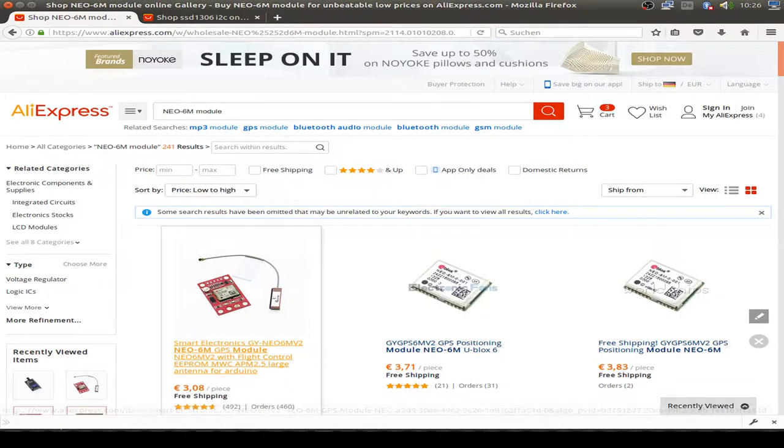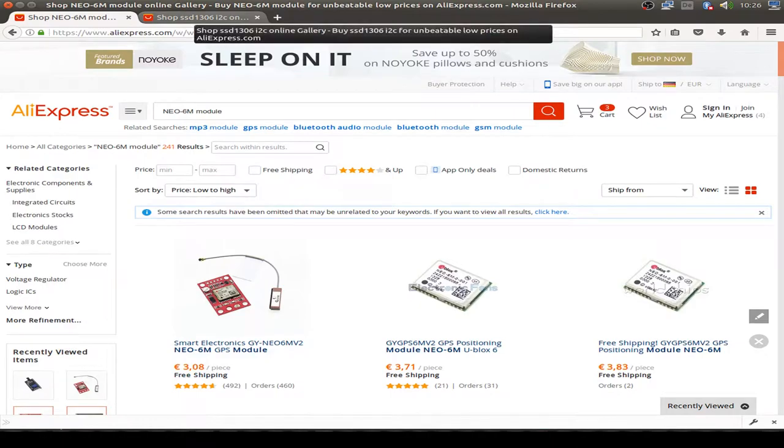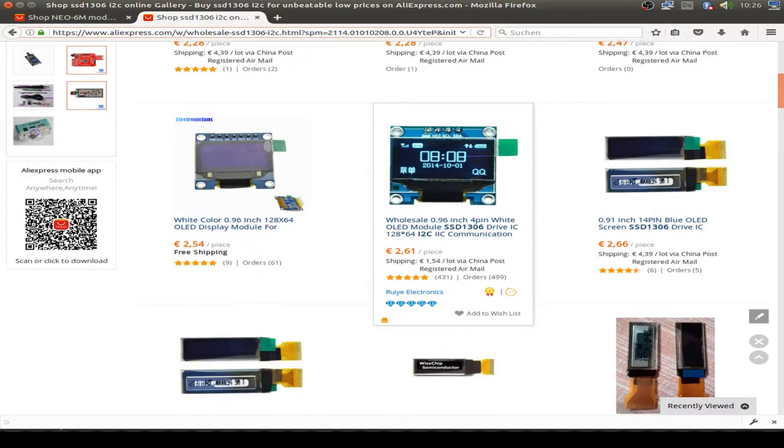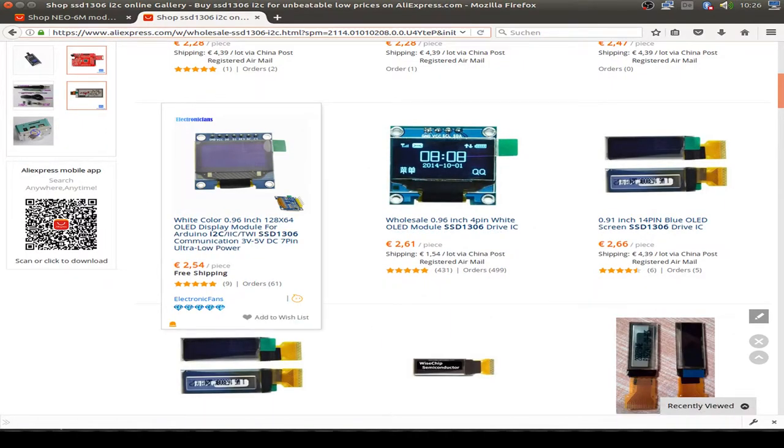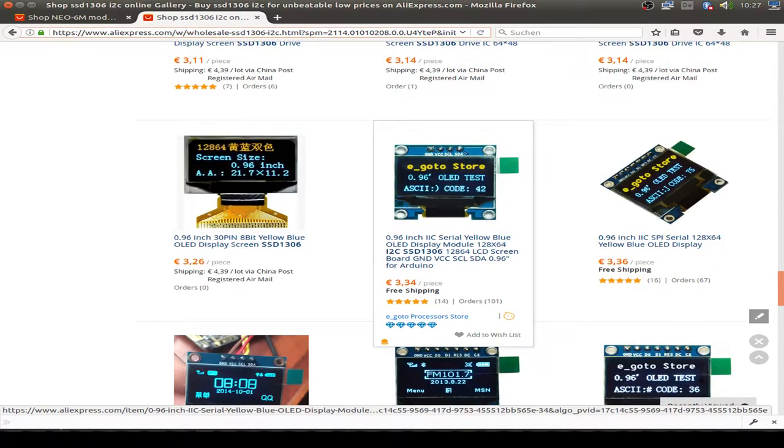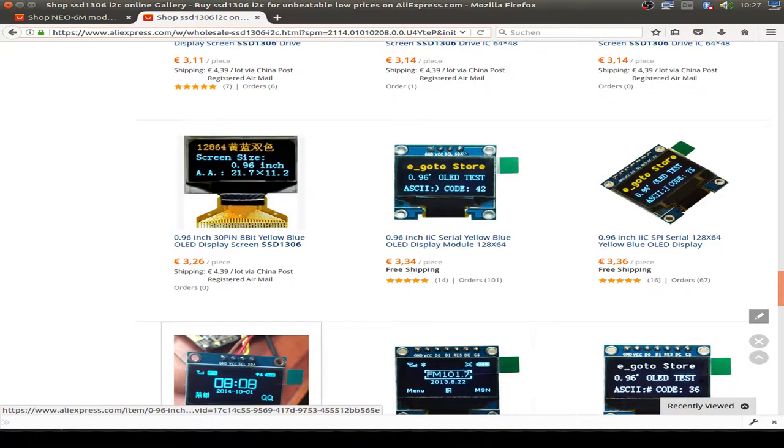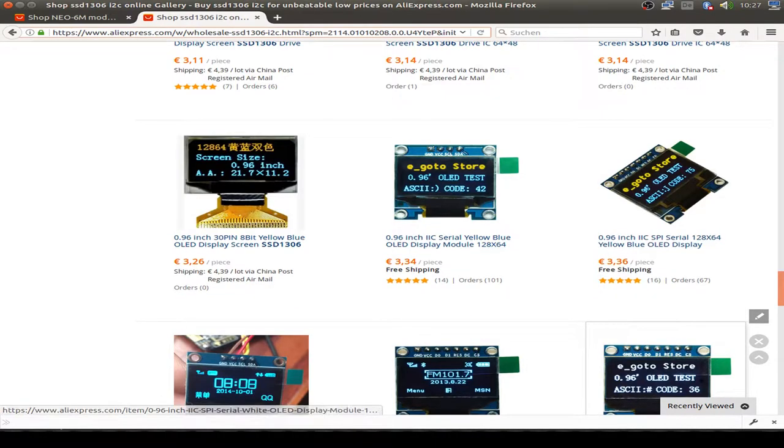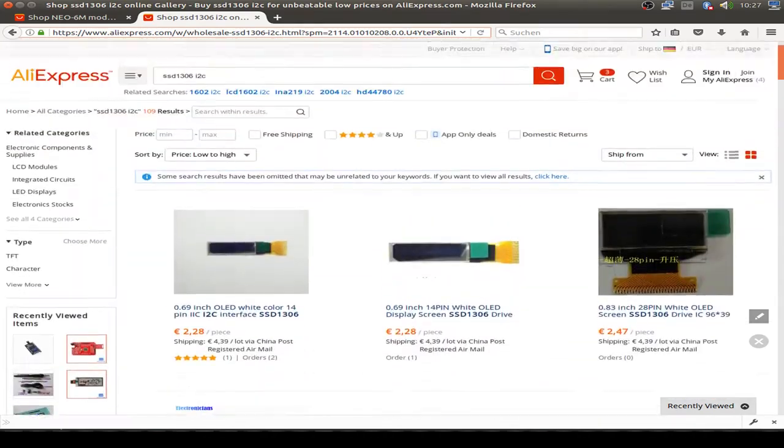This is the module I ordered for maybe three dollars including shipping and I also ordered one of the I2C OLED displays. As you see there's not only the I2C version, there's also SPI bus driven versions. There are also different versions for the color: a blue version, a two-color version and a white version. Just order the right one that you like.